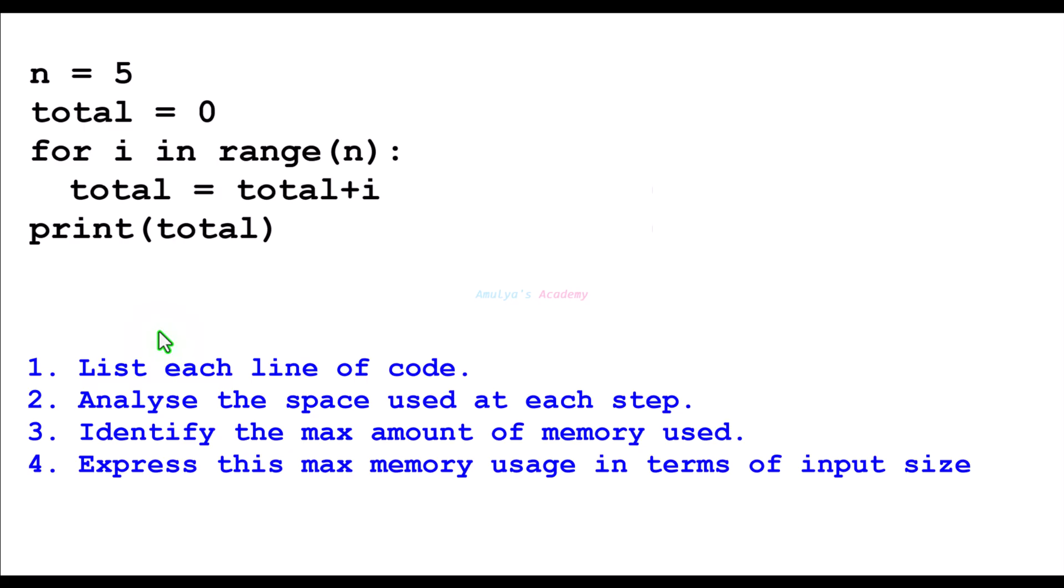Express this maximum memory usage in terms of input size. So here, the first line is one integer number. We are storing this integer number in a variable. It takes constant space, Big O of 1. Then total equals 0, it is also an integer number, so constant space, Big O of 1.